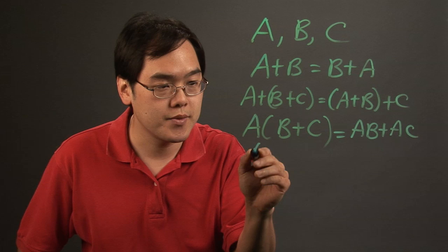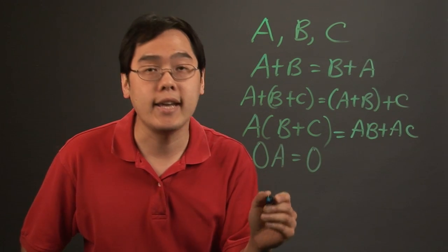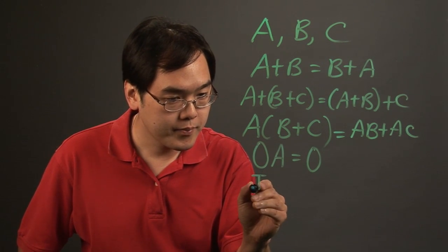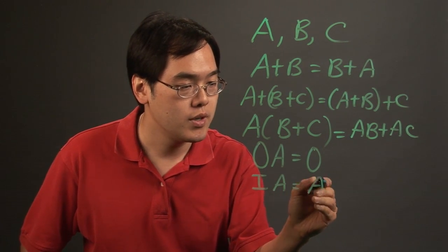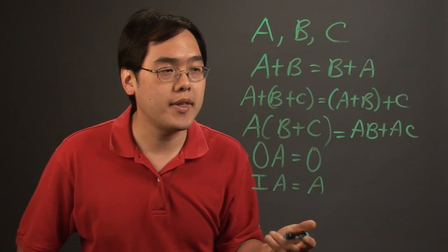If you have the zero matrix, where zero times A, that's going to give you the zero matrix again. If you have an identity matrix, IA, that's going to give you the matrix A back.